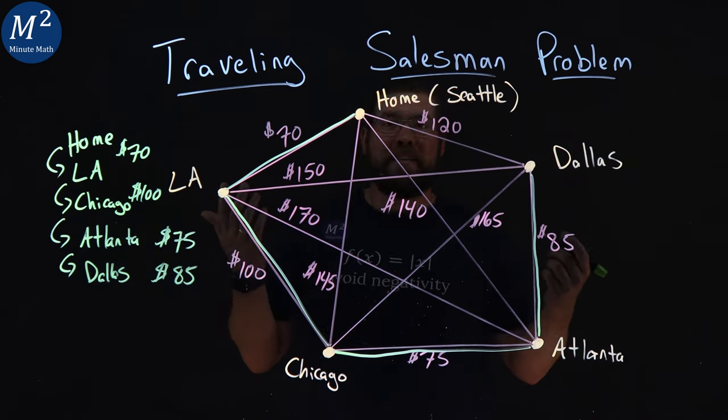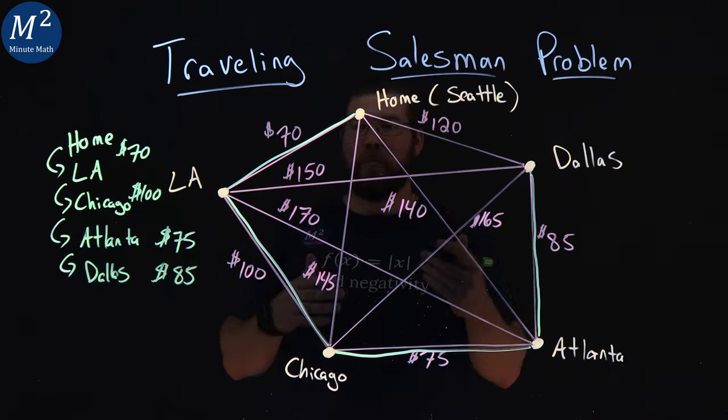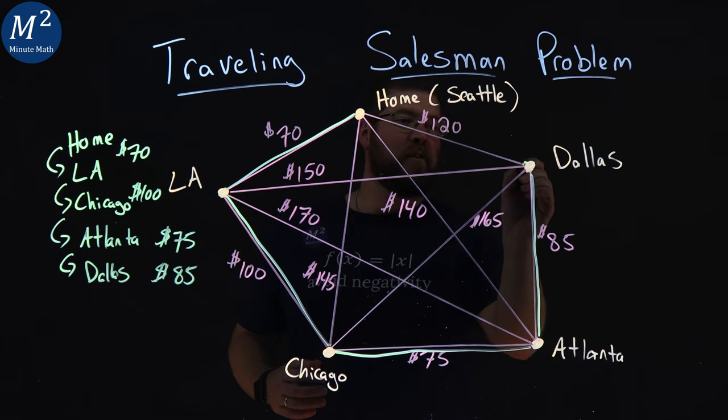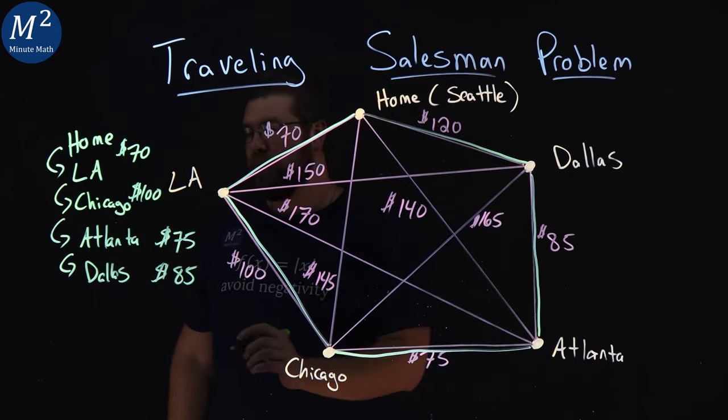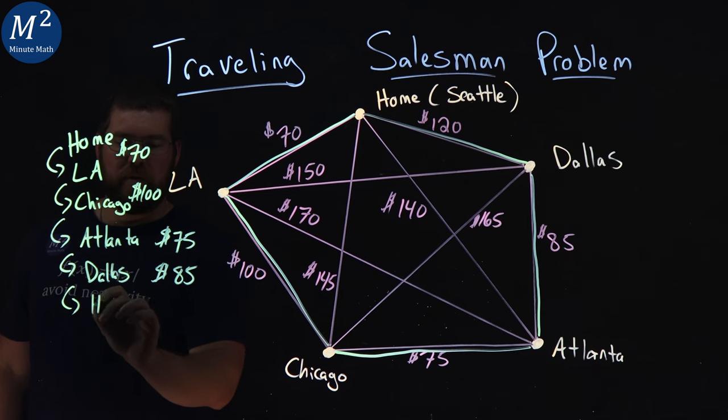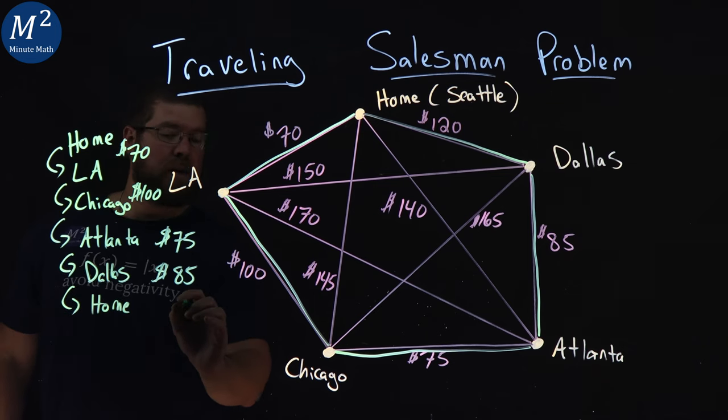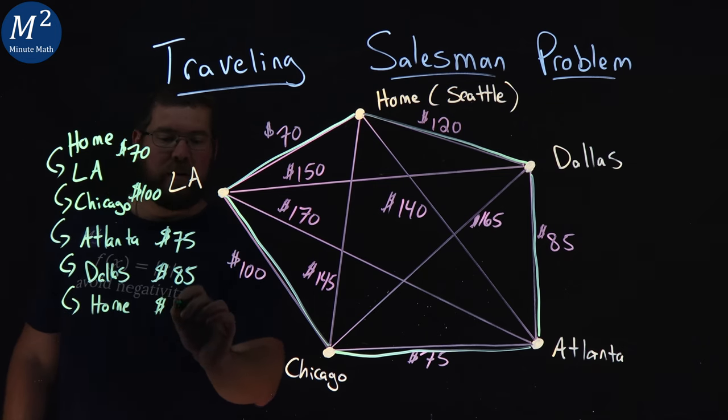Then from Dallas, we have to make it back home. There's only one flight there. We cannot repeat a city. So go from Dallas back home, or in this case, Seattle. We'll call it home here. And that cost was $120.